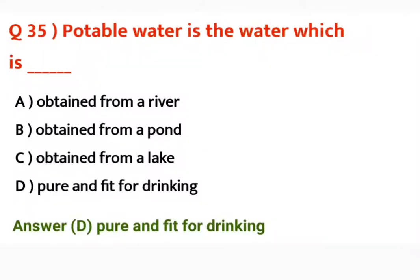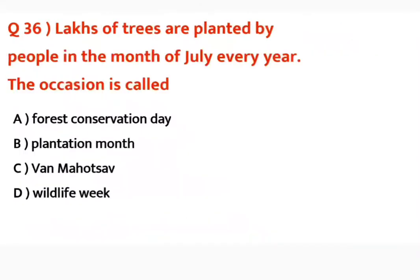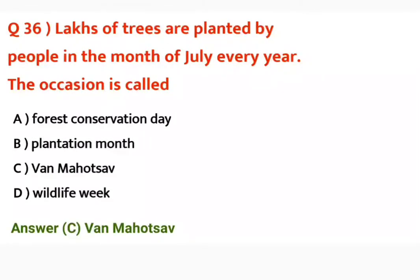Question number thirty-six: Lakhs of trees are planted by people in the month of July every year — this occasion is called Van Mahotsav.